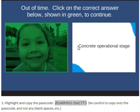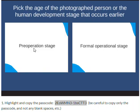You'll see either the name of a stage, or you'll see an image of a person. Whichever occurs earlier in the timeline is what you would click on. Since the Concrete Operational Stage is ages 7 to 12, and the picture of the girl on the left — she's younger than 7 — that's why we're clicking on the card on the left.